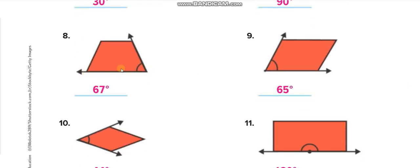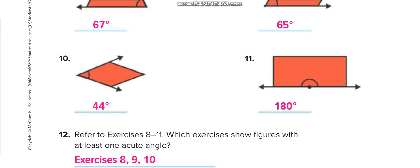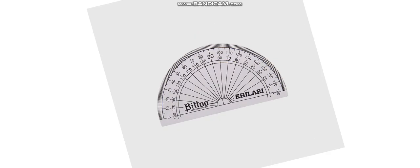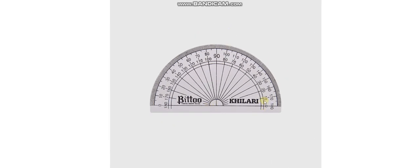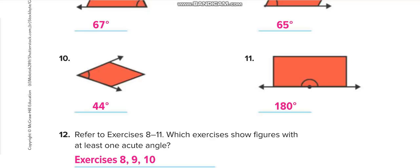Put the zero on this line and read 67 degrees; for the next, zero on this line gives 65 degrees. Put the zero on this line and check — it is 45 degrees. For a straight line, you have half a circle which is 180 degrees. If you start from zero along a straight line, you reach 180 degrees — so a straight line always measures 180 degrees.